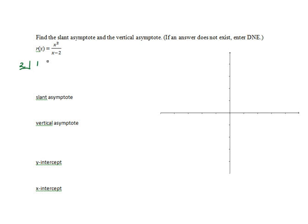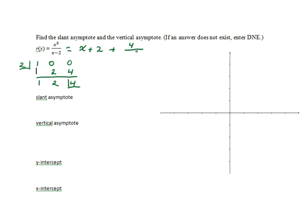The coefficients will be 1, 0, 0, since the x term and the constant term are missing. 1 will be the leading term in the coefficient. 1 times 2 is 2, plus 0 is 2. 2 times 2 is 4, plus 0 is 4. Thus the function is equivalent to x plus 2 plus 4 divided by the quantity x minus 2.